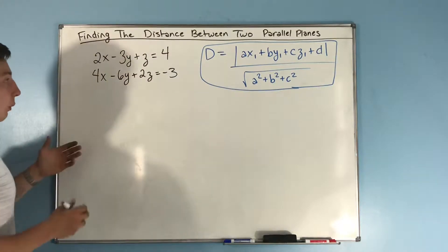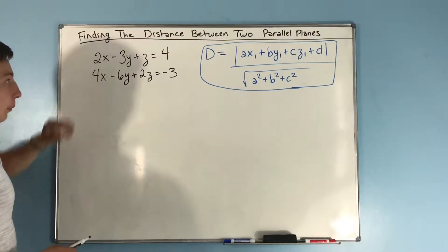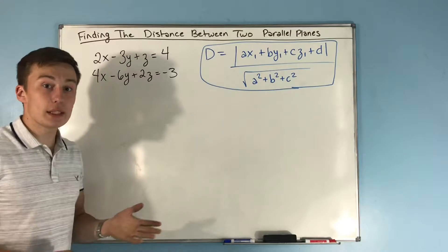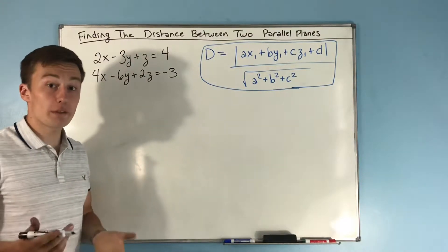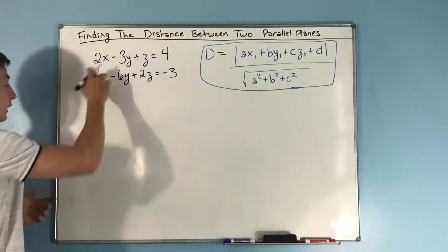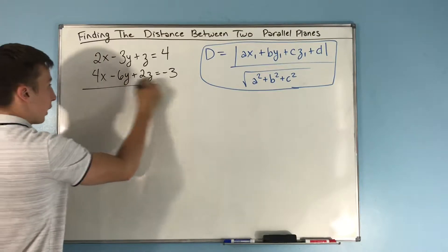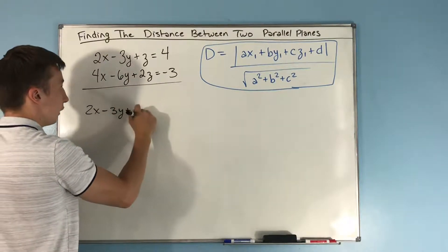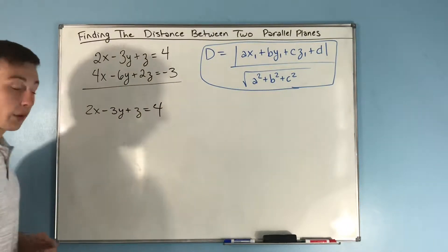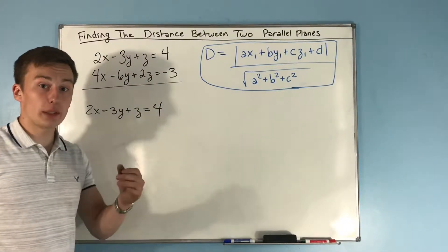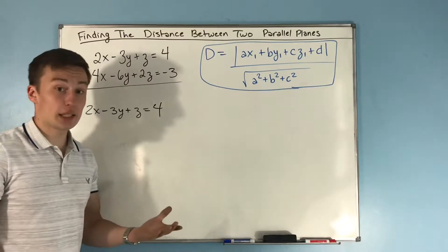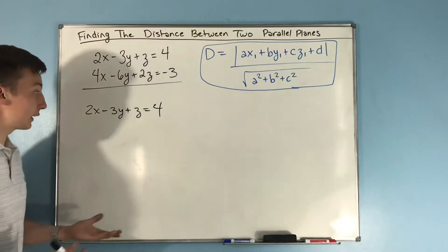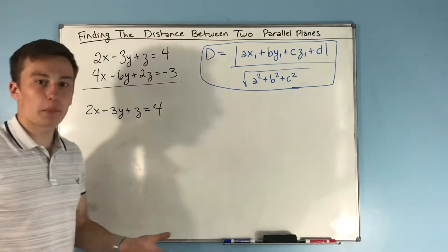Here's what we can do for two parallel planes: we can still make this a point and a plane problem. All we have to do is take this plane right here: 2x - 3y + z = 4. We want to find a point on the x-axis. If we find a point on the x-axis, it's just a point on the plane.